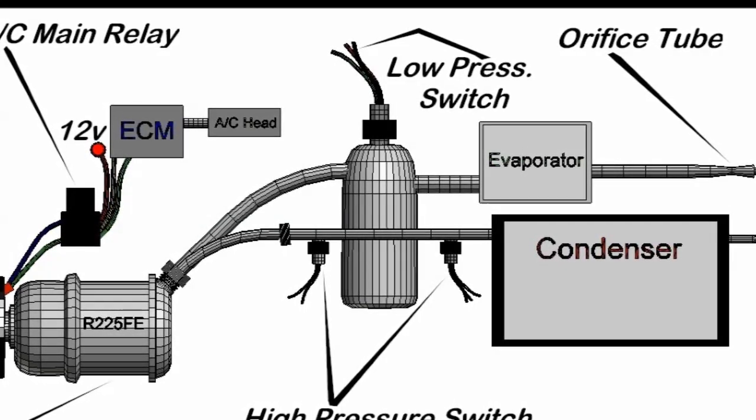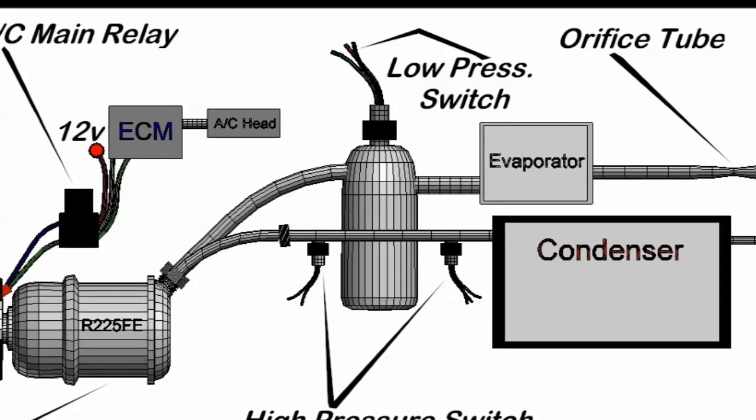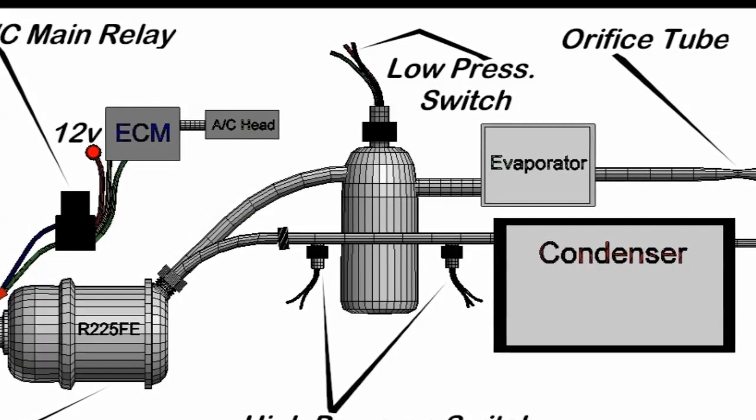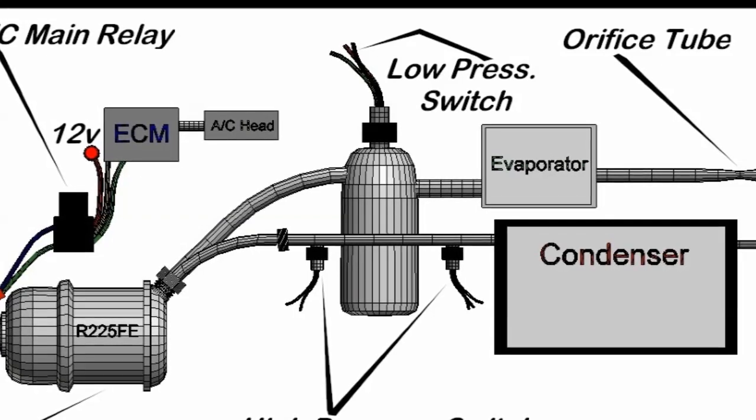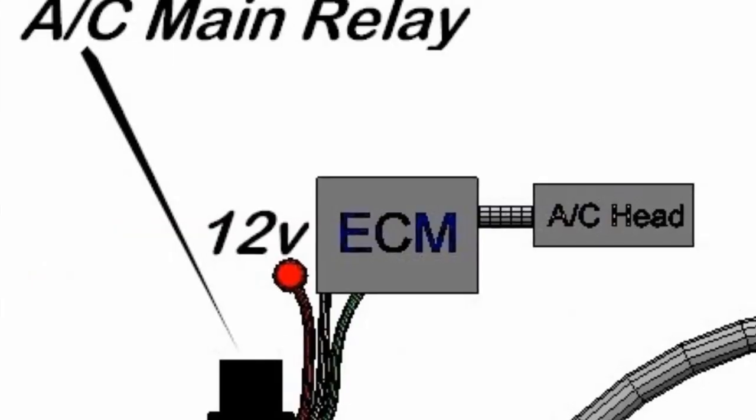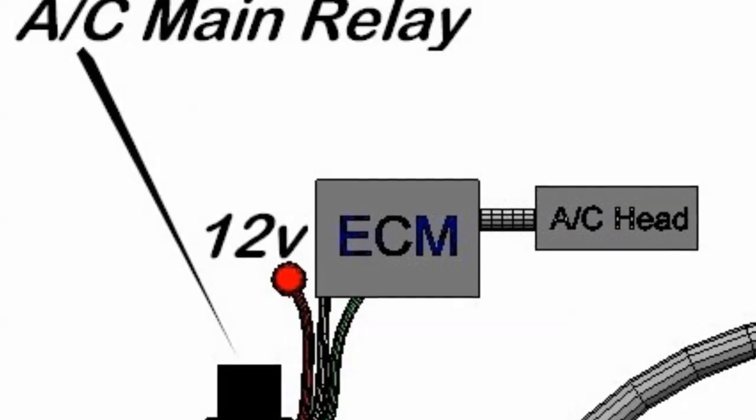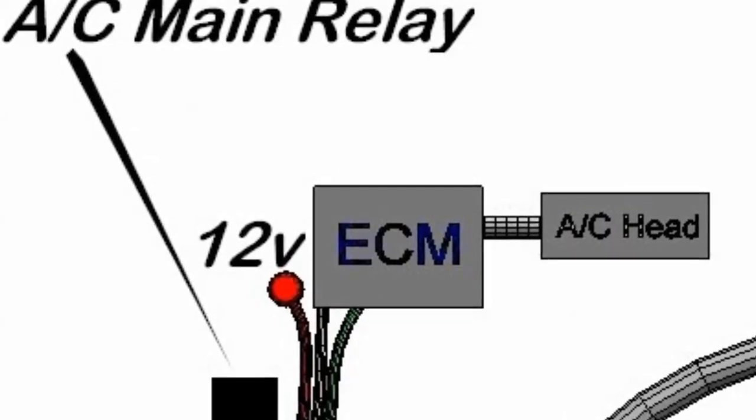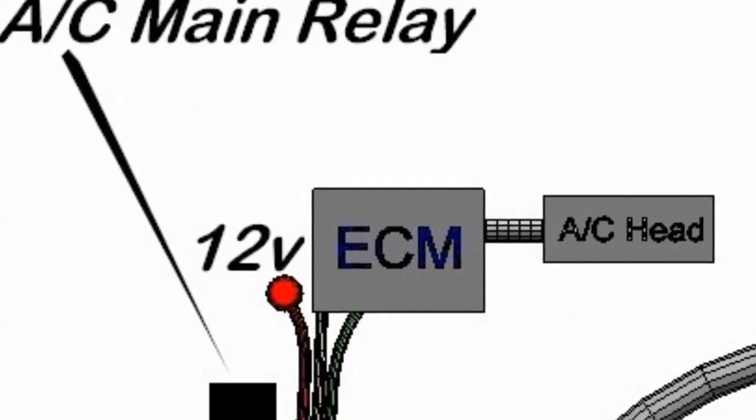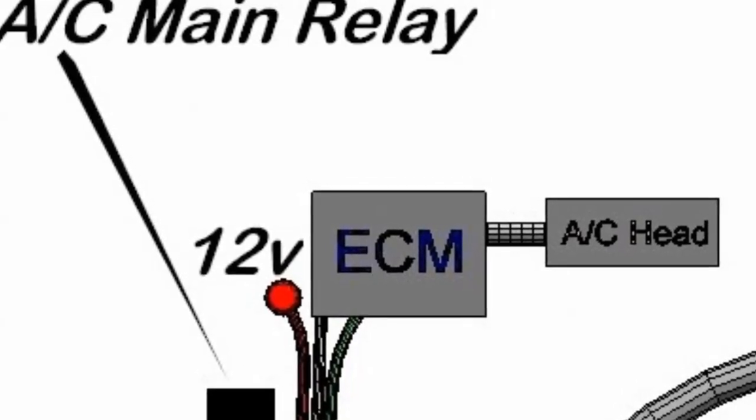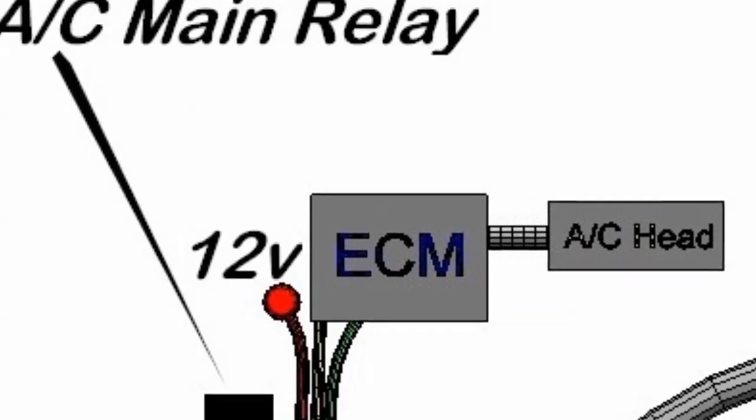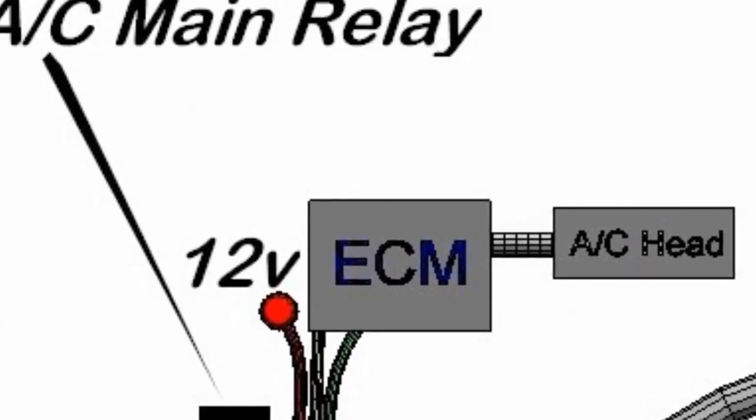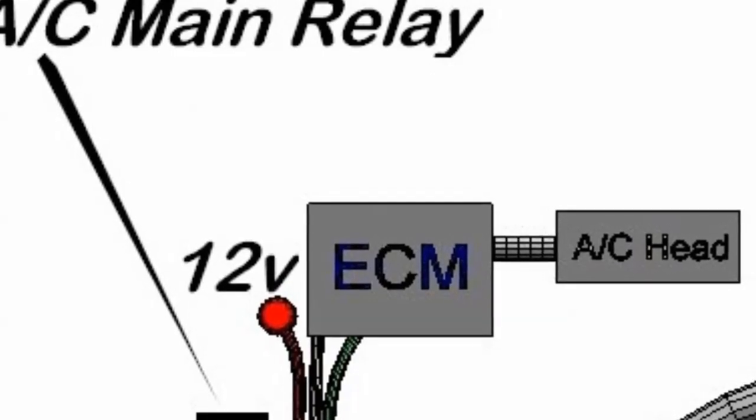So here you see the compressor which is actuated. The clutch itself is actuated by a 12-volt relay. The relay itself is actuated by the ECM, always. Now the AC head, which is the computer for the air conditioning HVAC system, commands actuation to the ECM, and the ECM makes the determination according to its software to actuate the compressor or not.